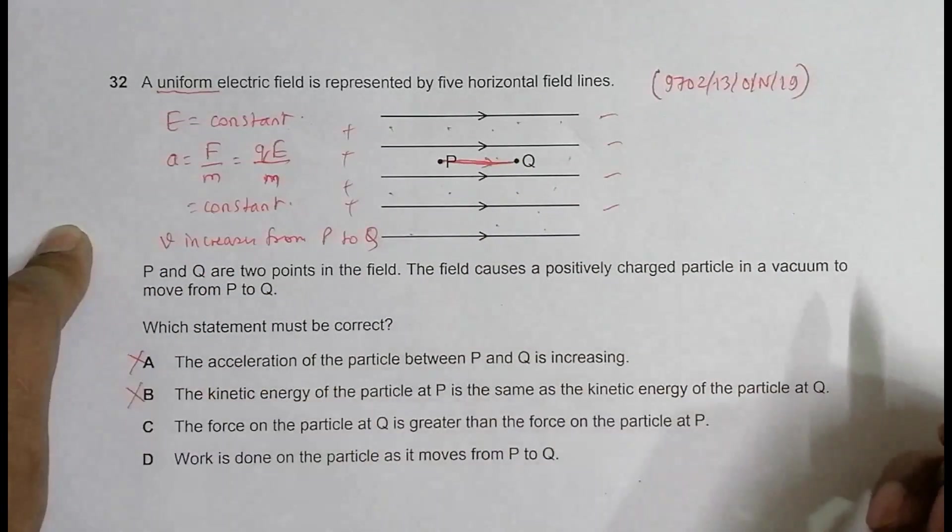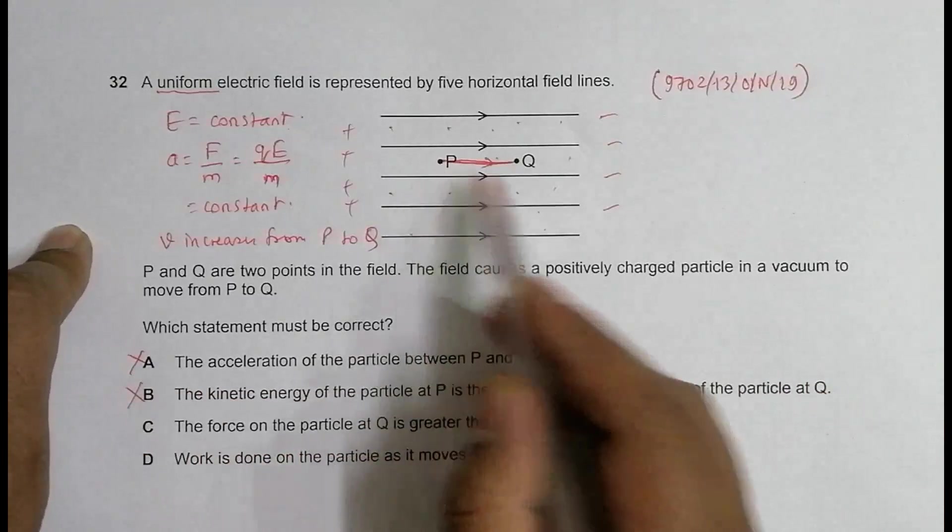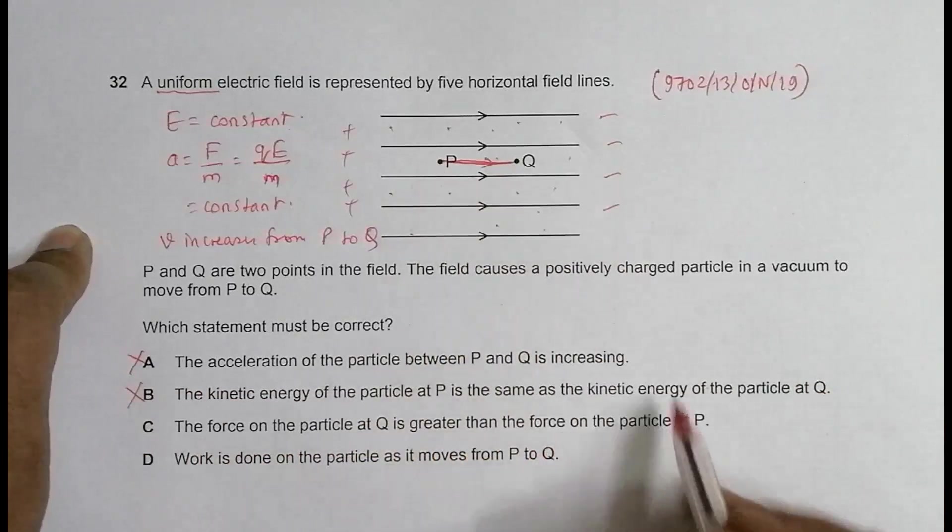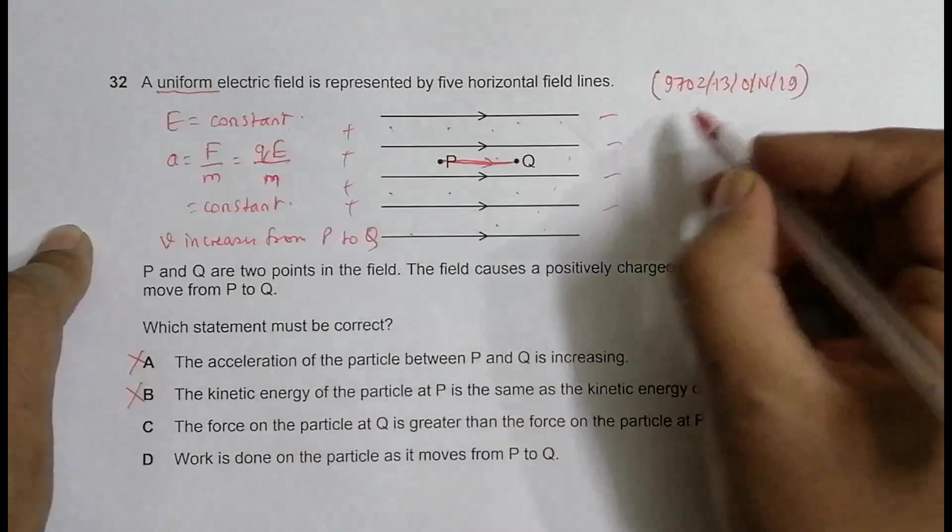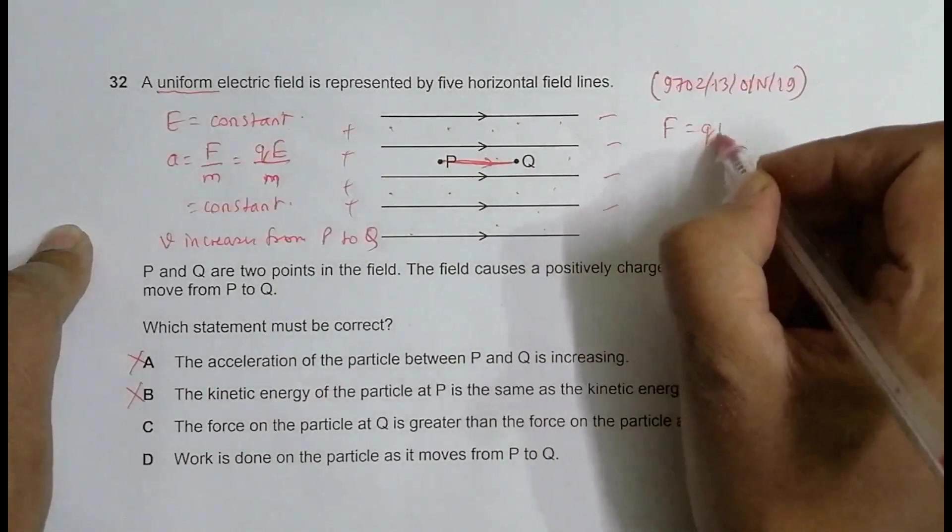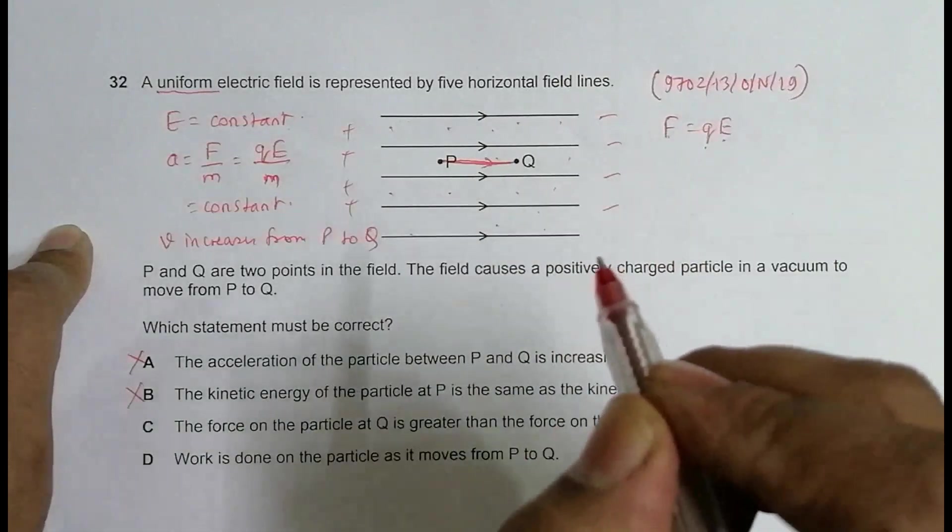In the next choice, we have the force on the particle at Q is greater than the force on the particle at P. But let's see, force is equal to Q into E. E is same everywhere, Q is same, so force is same everywhere. This statement is also not correct.